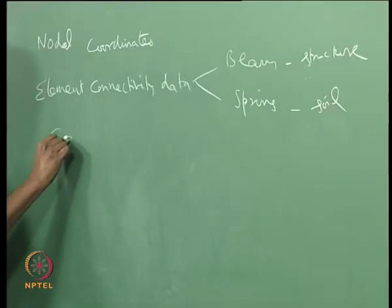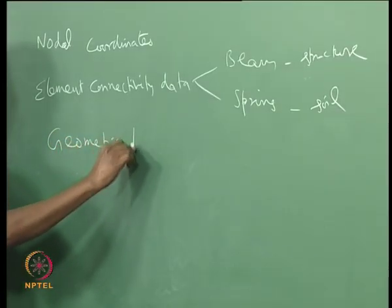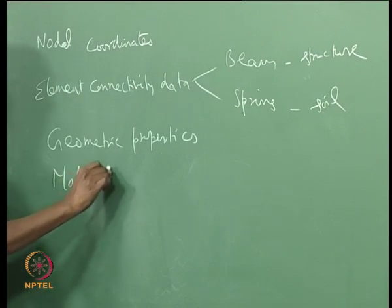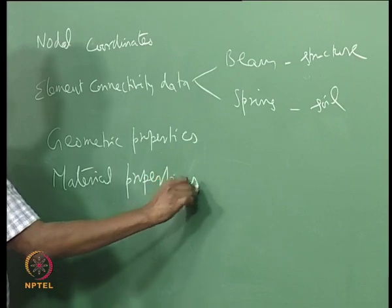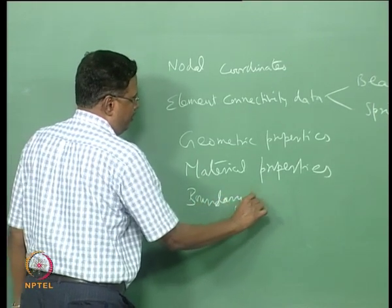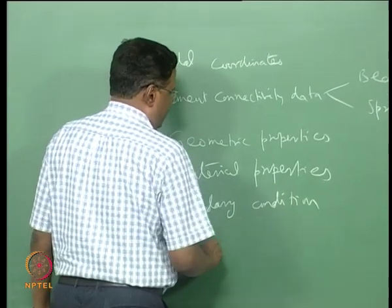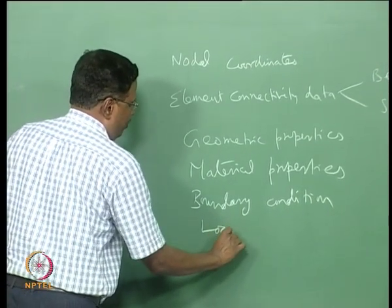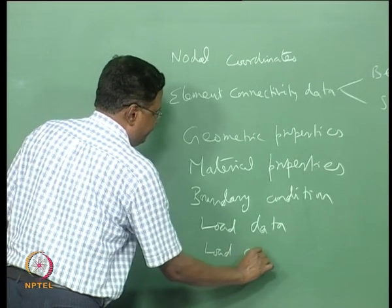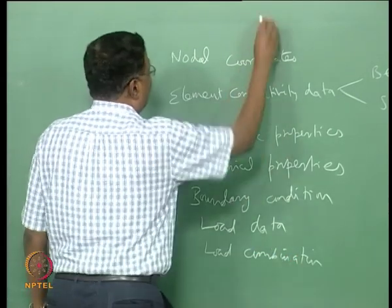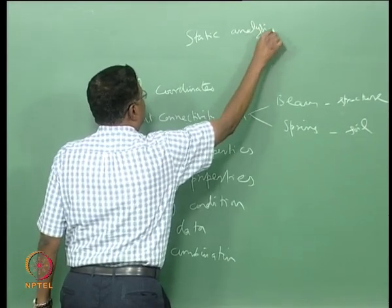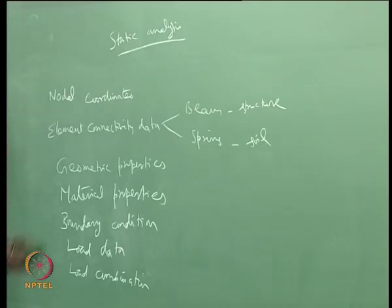Then we will give the geometric properties and material properties, then we will give the boundary condition. Boundary condition is very important — if you do not give the boundary condition then your results will not be proper. Then we have to give the load data and then load combinations. We are now doing only a static analysis, but the program can also be used to do a dynamic analysis.